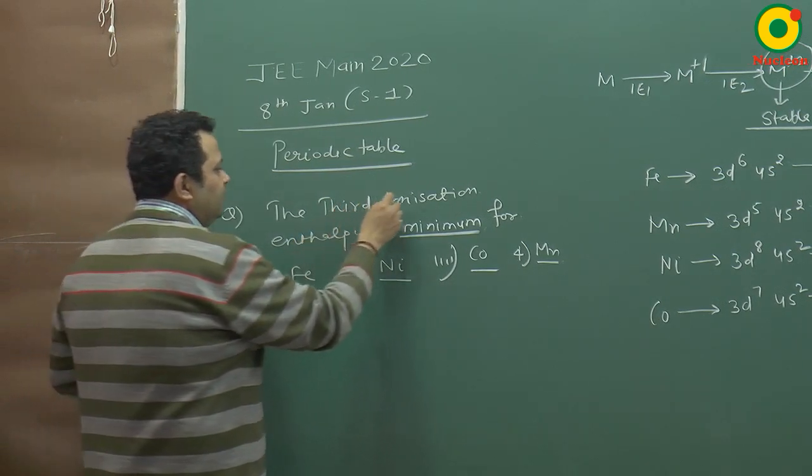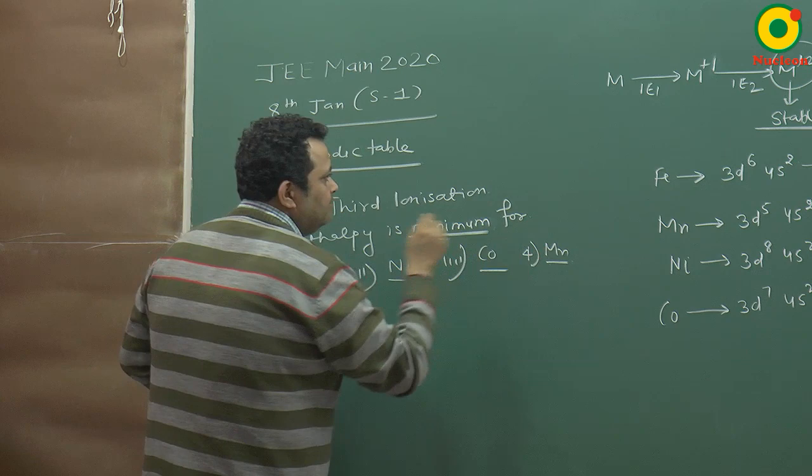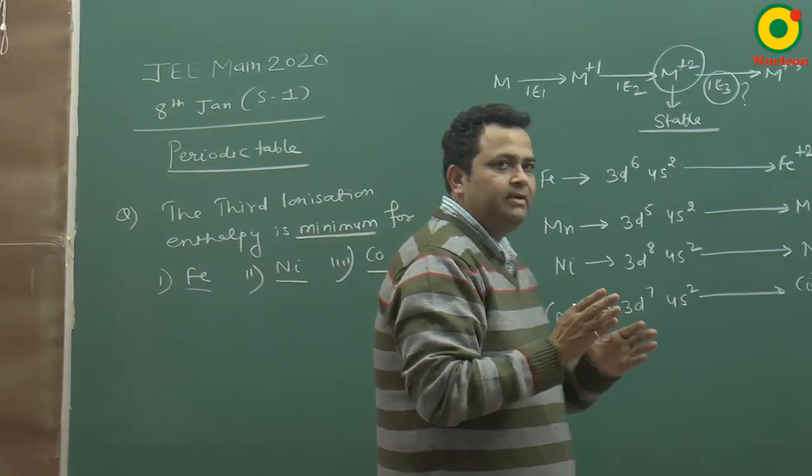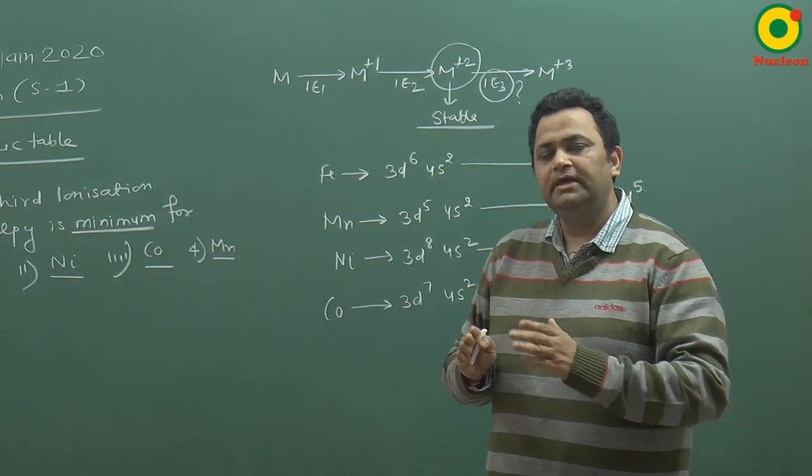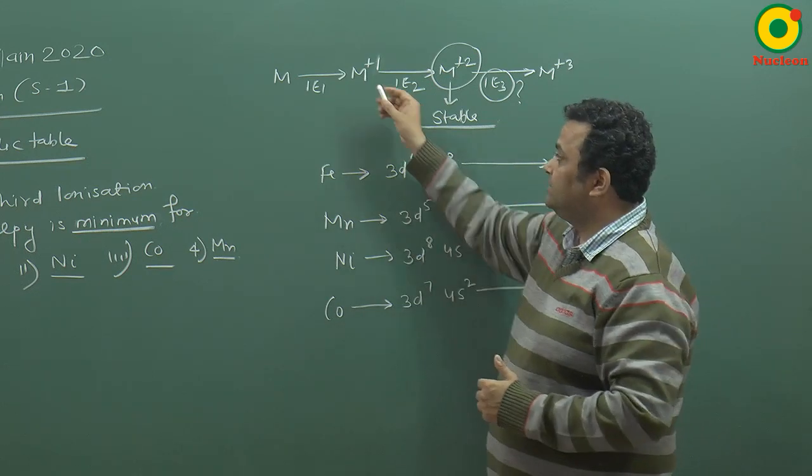The third ionization enthalpy is minimum for iron, nickel, cobalt, manganese. What is meant by third ionization enthalpy? Third ionization enthalpy means that we are going to remove three electrons. So if we remove the first electron from a neutral atom,